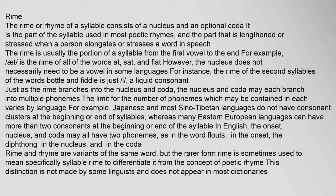Just as the rhyme branches into the nucleus and coda, the nucleus and coda may each branch into multiple phonemes. The limit for the number of phonemes in each varies by language. Japanese and most Sino-Tibetan languages do not have consonant clusters at the beginning or end of syllables, whereas many Eastern European languages can have more than two consonants at the beginning or end. In English, the onset, nucleus, and coda may all have two phonemes, as in the word 'flouts.' The rarer form 'rhyme' is sometimes used to mean specifically syllable rhyme, to differentiate it from poetic rhyme.